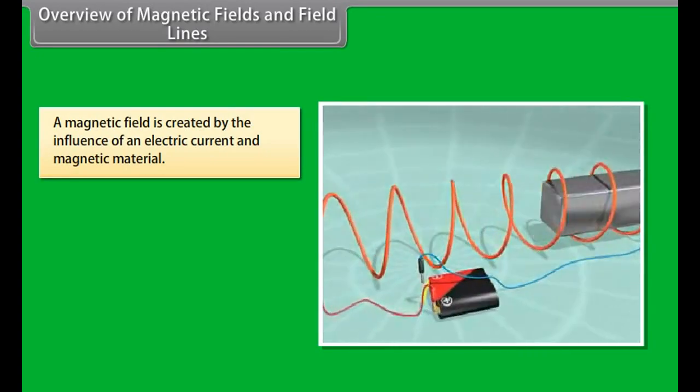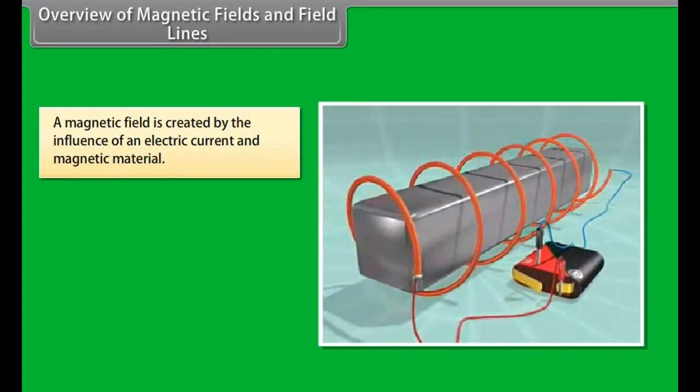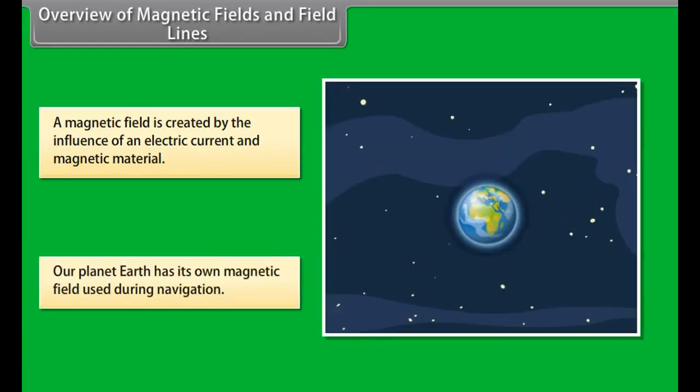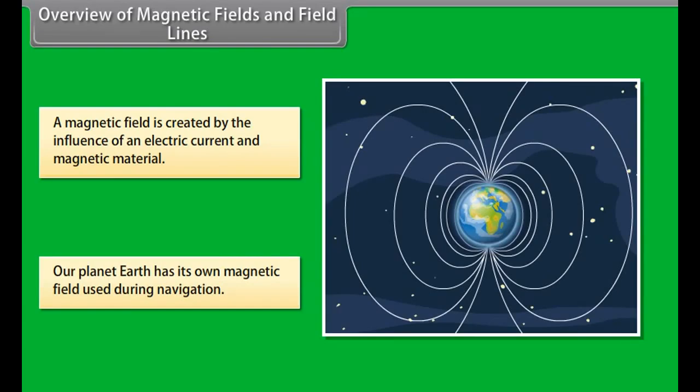Overview of magnetic fields and field lines. A magnetic field is created by the magnetic influence of an electric current and magnetic material. Our planet Earth produces its own magnetic field, which is an important factor during navigation. Magnetic fields are also used in electric devices such as transformers.